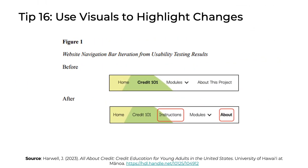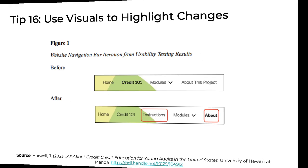Tip 16: Use visuals to highlight changes. Sometimes, when you make changes to your instructional product in the context of a usability test, those changes can be quite subtle and difficult for someone unfamiliar with your project to discern. A good way around this is to use highlights or signaling arrows, such as this red rectangle, to showcase what was actually changed to the instructional product. The principle here is simple: just make it as easy as possible for your readers to understand what parts of your instruction actually changed.